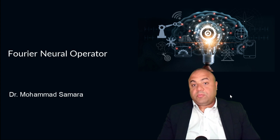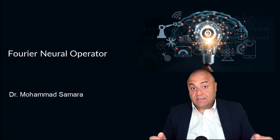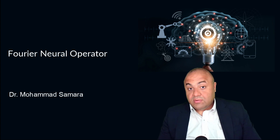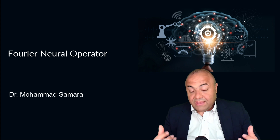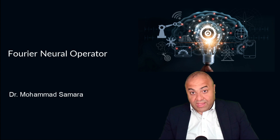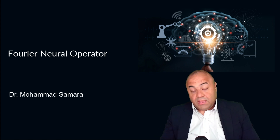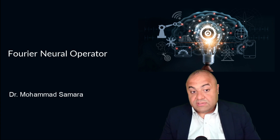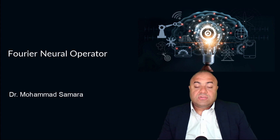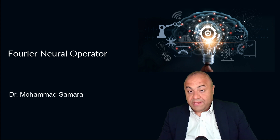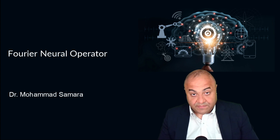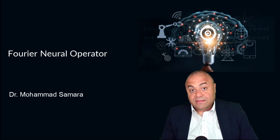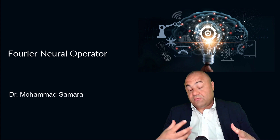The Fourier Neural Operator is a network that solves governing equations or physics-based systems using only data. We train these networks only using data to get the answer we want. For example, if we have the weather now as the initial condition, and we want to predict the weather in the future, we can use the Fourier Neural Operator. The main purpose of developing such an operator is solving physics systems that have an underlying physics phenomena with a specific boundary condition.